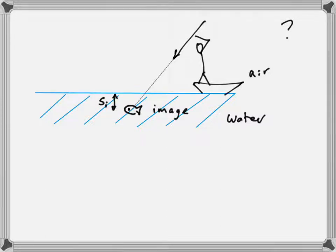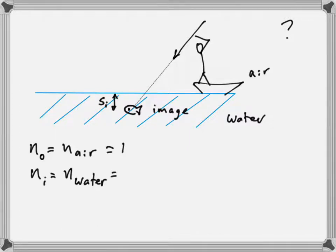The fisherman sees the image of the fish — the rays captured by the fisherman's eyes seem to come from a particular location, which is where the fisherman perceives the fish. The distance to that image is s_i. The observer (the fisherman) is in air, so n_o is approximately 1. The image of the fish forms in the water, so n_i is 1.33.